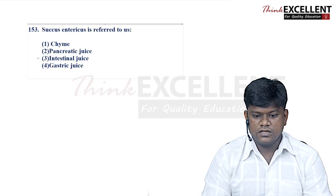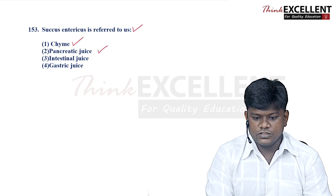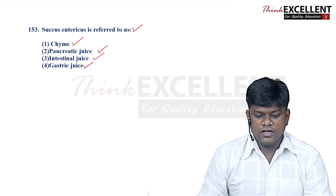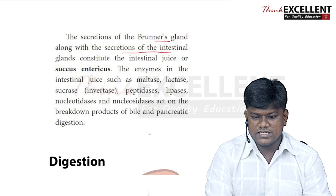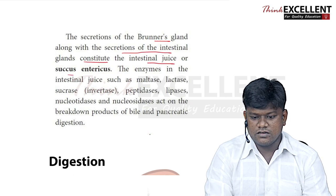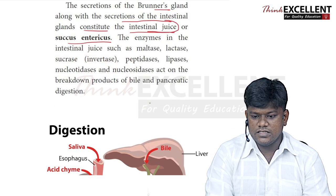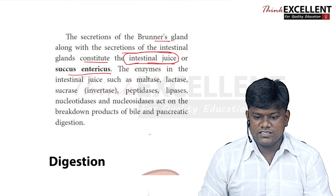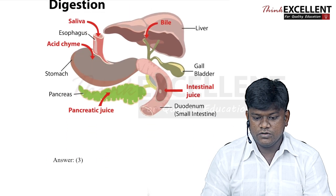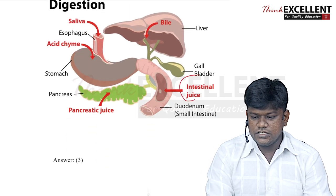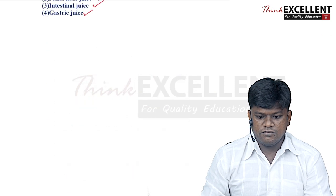Now moving to the next question: sucus entericus is referred to as? Options are pancreatic juice, intestinal juice, and gastric juice. Secretions of Brunner's glands along with secretions of intestinal glands constitute the intestinal juice or sucus entericus. This evidence is present in the state board syllabus. So option 3 — intestinal juice — is the right answer.